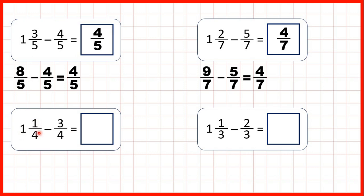Now 1 and 1 quarter minus 3 quarters. Again, we need to change 1 and 1 quarter to an improper fraction. 1 times 4 is 4, plus 1 is 5, and the denominator stays the same.